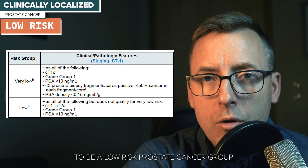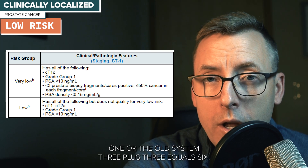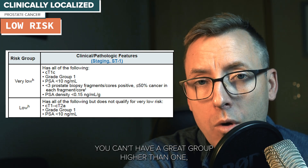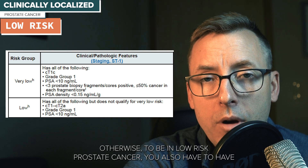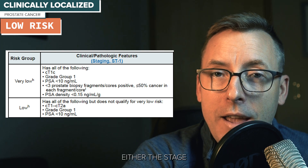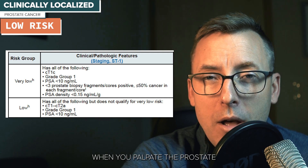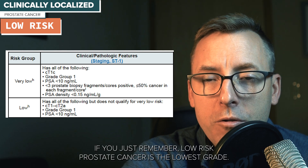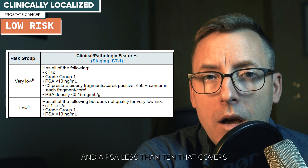To be in the low risk prostate cancer group, you just need a PSA of less than 10 and Gleason grade group 1 (3+3=6). You cannot have a grade group higher than 1 or a PSA higher than 10. You also need a stage of T1C or T2A — found by PSA alone or a small nodule involving less than half of one side of the prostate. For most people, low risk prostate cancer simply means the lowest grade and a PSA less than 10.